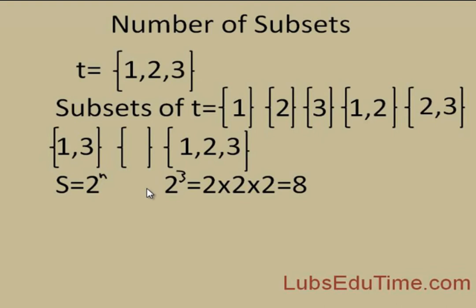There is a formula to find the number of subsets within a set: S = 2^n, where S is the number of subsets and n is the number of elements. For set T with three elements {1, 2, 3}, you have 2^3, which is 2 × 2 × 2, and that equals 8.